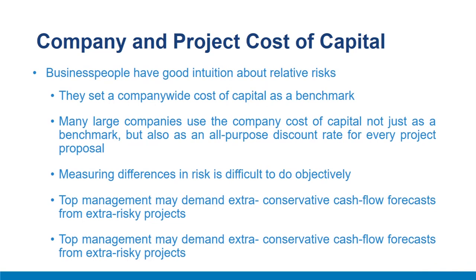Business people have good intuition about relative risks, at least in industries they know, but not about absolute risk or required rates of return. Therefore, they set a company-wide cost of capital as a benchmark — not the right rate for everything, but adjustable for more or less risky ventures. Many large companies use the company cost of capital as an all-purpose discount rate. When firms force use of a single rate, risk adjustments shift to project cash flows. Top management may demand extra conservative forecasts or require NPV well above zero for risky projects. Such rough adjustments are better than none.